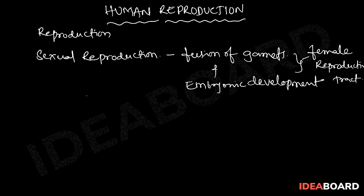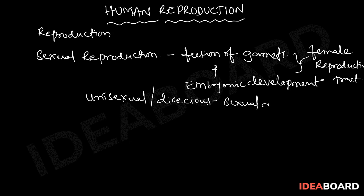Human beings are unisexual or dioecious, with sexual dimorphism. Sexual dimorphism means the appearance of variations in male and female organisms.